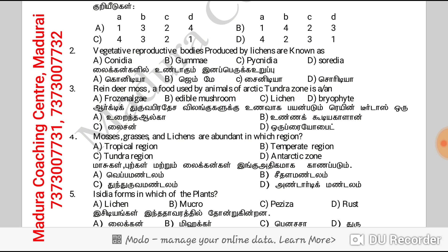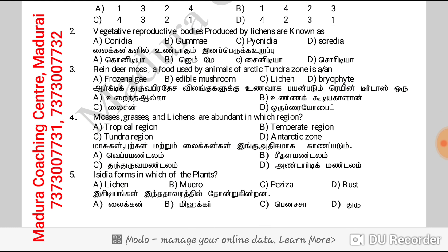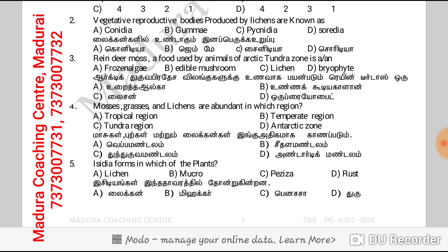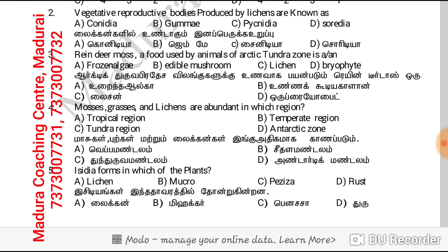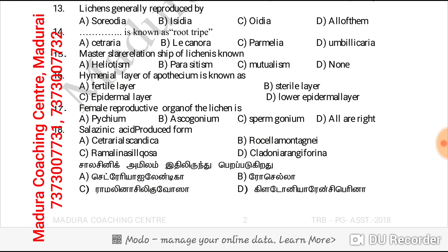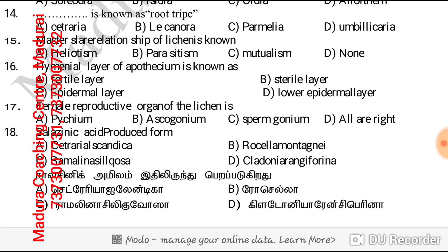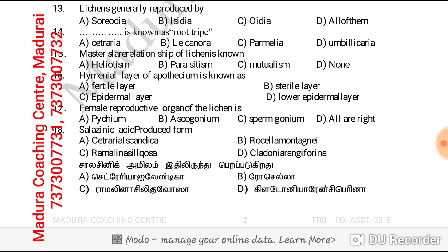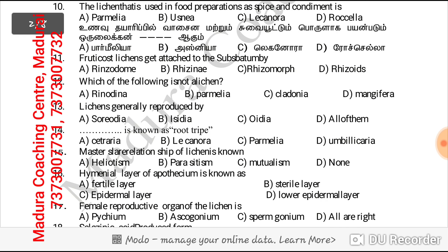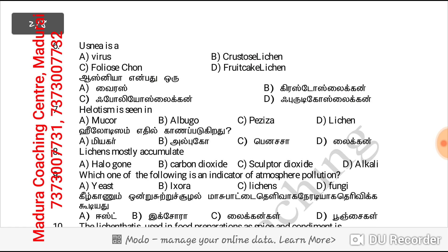Reindeer moss is a food used by animals of Arctic Tundra.